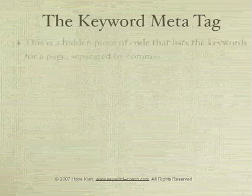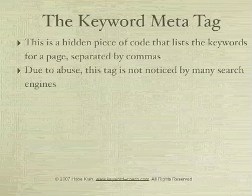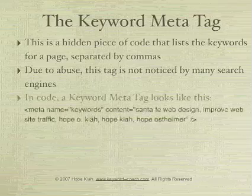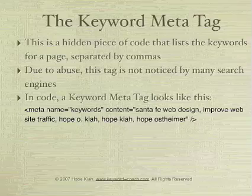The keyword meta tag is a hidden piece of code that lists the keywords for a page, separated by commas. Due to abuse of this tag, it's not noticed by many search engines anymore, but it doesn't hurt to use it, and I would recommend including the keywords for any given page in a keyword meta tag. In code, it would look like this. This is the keyword meta tag for my home page, which has Santa Fe web design, improve website traffic, and different iterations of my name.